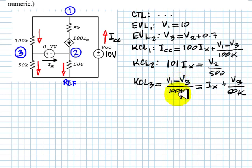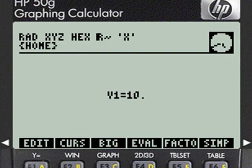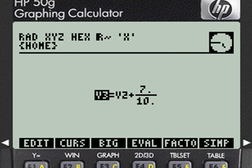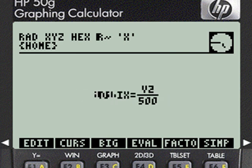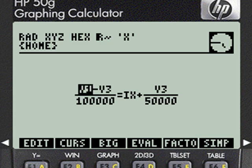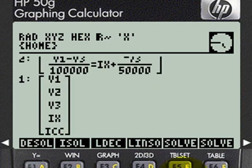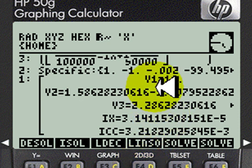Enter those equations in the calculator and solve for the answers. The first equation, the second equation, the third equation, the fourth equation, and the last equation. We solve for the system of equations, and the answers come out like this.